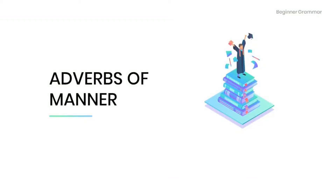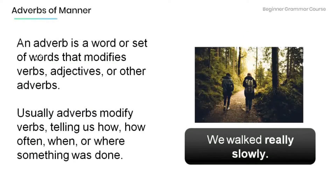Welcome to this tutorial. Today we're going to talk about adverbs of manner. Remember that an adverb is a word or set of words that modifies verbs, adjectives, or other adverbs. Note that they usually modify verbs. For example, in 'we walked really slowly,' the adverb 'slowly' modifies the verb 'walked' and tells us how we walked.